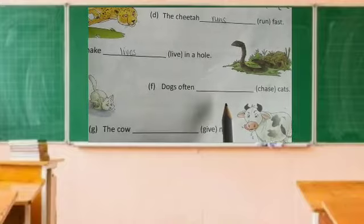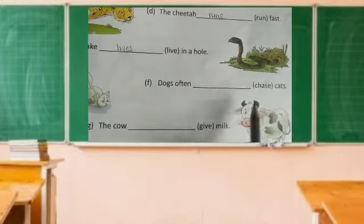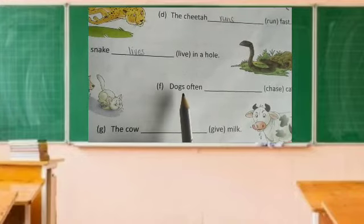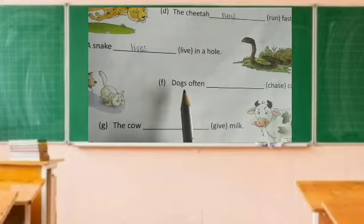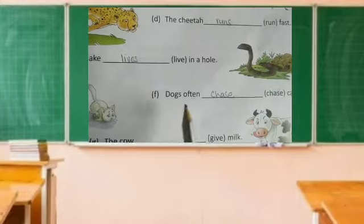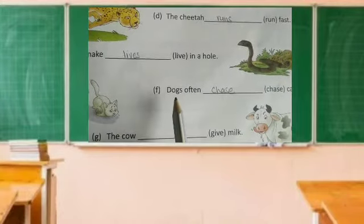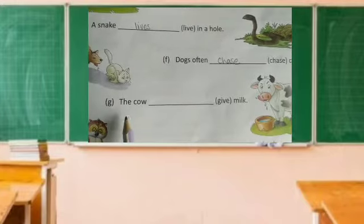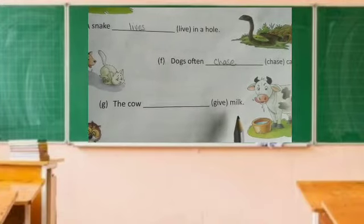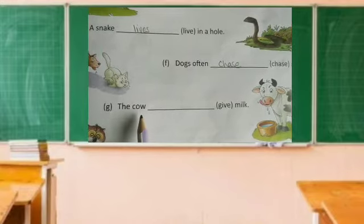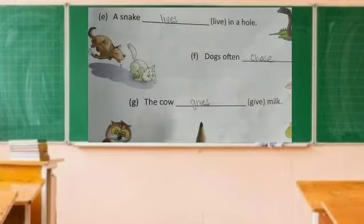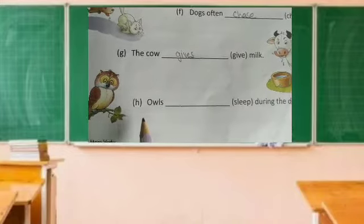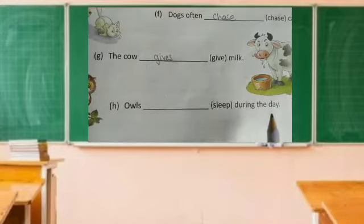(f) Dogs often dash cats. 'Dogs' is in plural form — more than one — so: dogs often chase cats. (g) The cow dash milk. The noun 'cow' is in singular form — the cow gives milk.